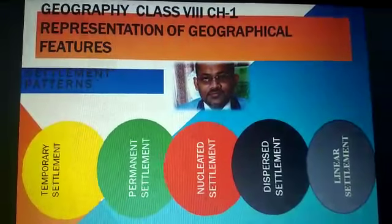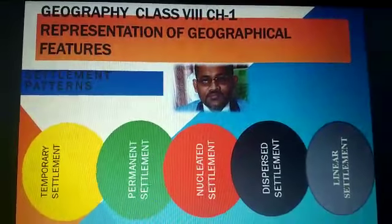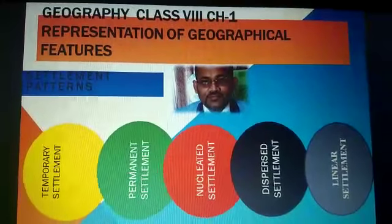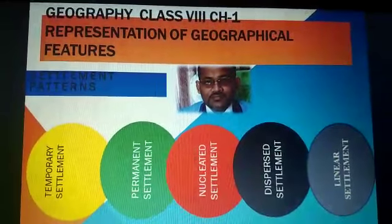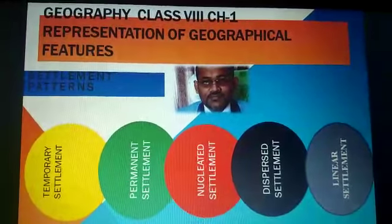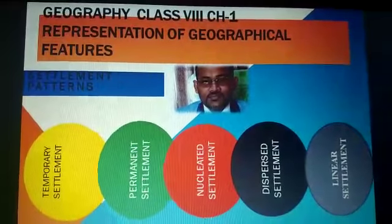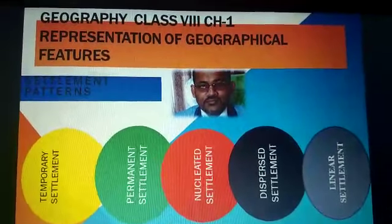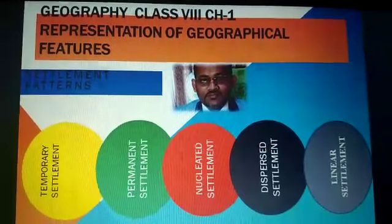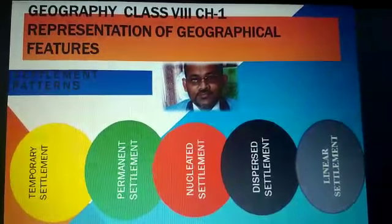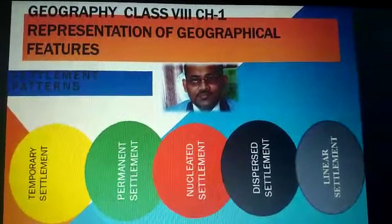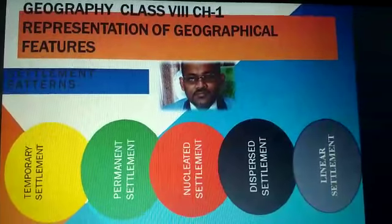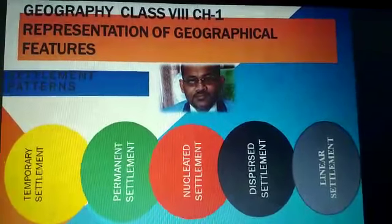The last type is the linear settlement. These settlements are strung out along a road or a stream in a line along the foothills of hills. They are also called ribbon settlements.